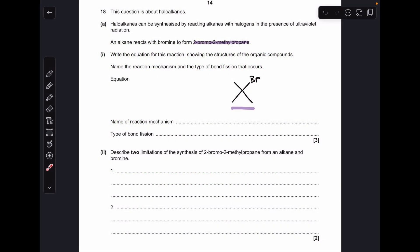The first part of A, we've got to give the equation that makes this alkane here. This is 2-bromo-2-methylpropane, so which alkane's going to react with the bromine? It's 2-methylpropane, so the full equation looks like that.